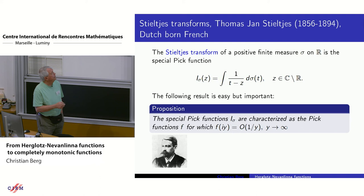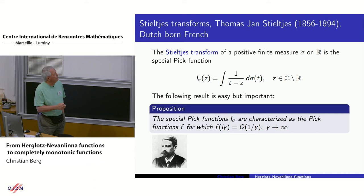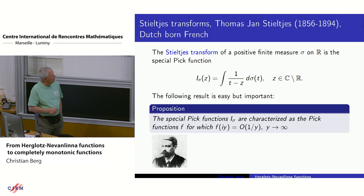Now I will consider some very special Pick functions called Stieltjes transforms. If you have a positive finite measure on the real line, you consider this expression — it's called a Stieltjes transform, or sometimes a Cauchy transform. This is certainly a Pick function. We have the following important result: the special Pick functions I_sigma are characterized as those Pick functions whose behavior on the imaginary axis satisfies that the function in absolute value is bounded by a constant divided by y when y tends to infinity. And here you will see my favorite mathematician Stieltjes, who considered these functions in 1894.